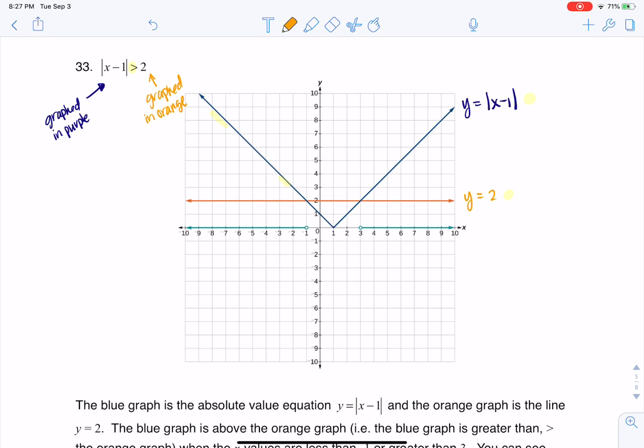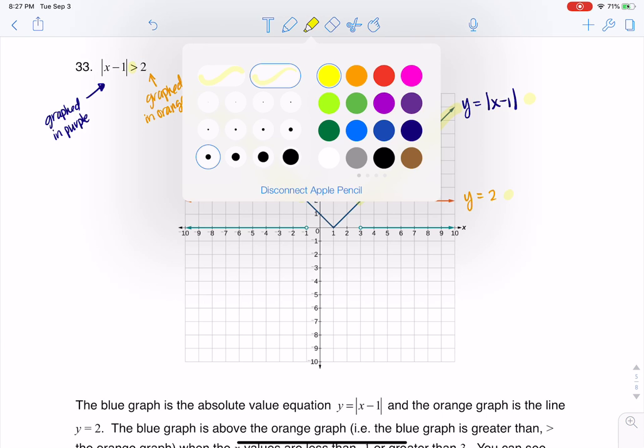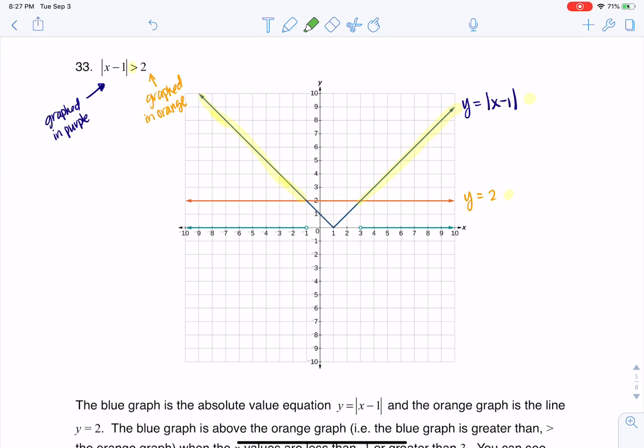Alright. And then I'll go re-highlight this. So basically everywhere in here and here is where the graph of the absolute value is greater than the horizontal line. And what we need to do is we need to figure out what x coordinates that go with.